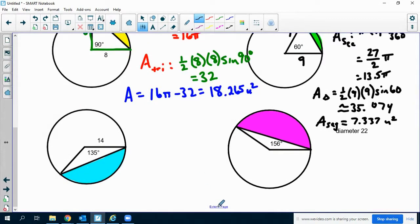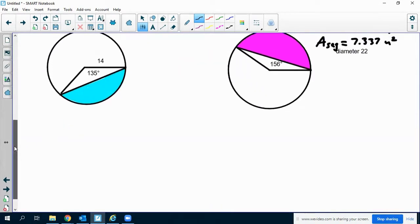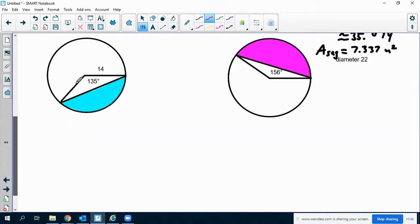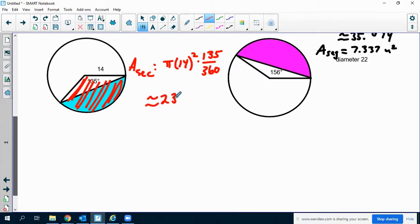Let's do two more of these really fast. So this one, I'm going to find the area of the sector. It's π times 14² times 135 over 360, because I'm finding this area. That ends up being about 230.907.